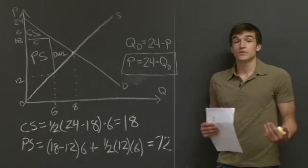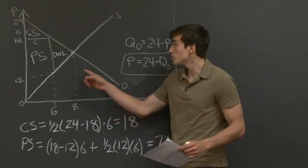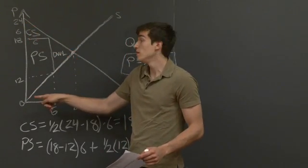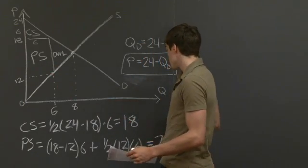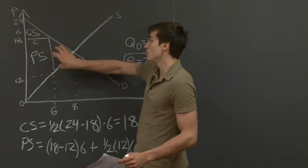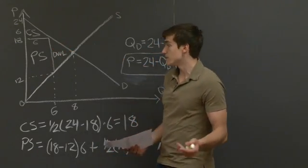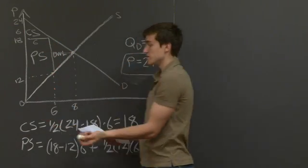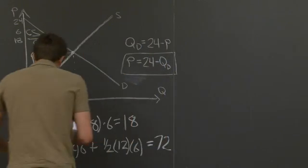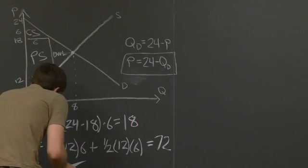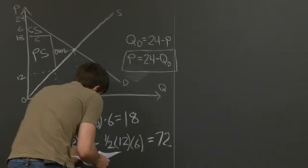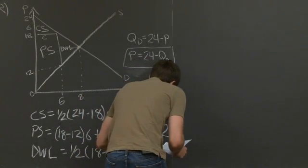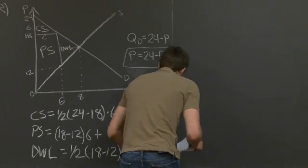To calculate deadweight loss, you have two options: find the total producer and consumer surplus at equilibrium and subtract out the new consumer and producer surplus, leaving only the deadweight loss. For our purposes, it's easier to just take the height of the triangle times the length of the base. When we do that, the deadweight loss equals 6.